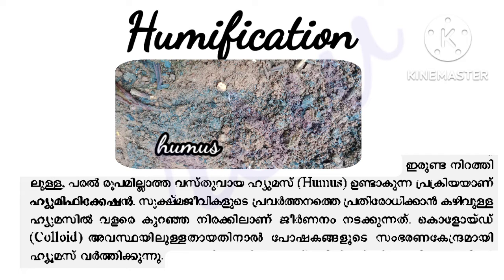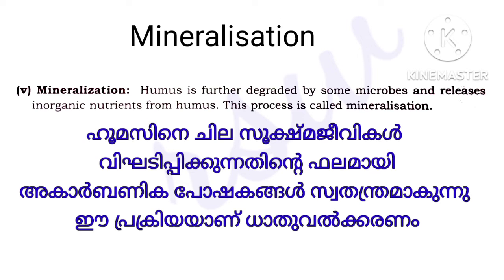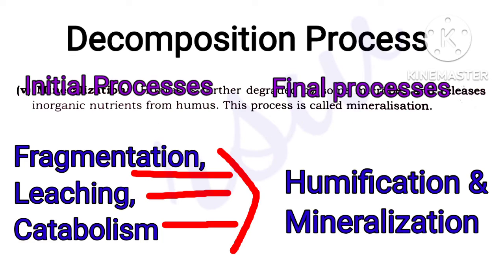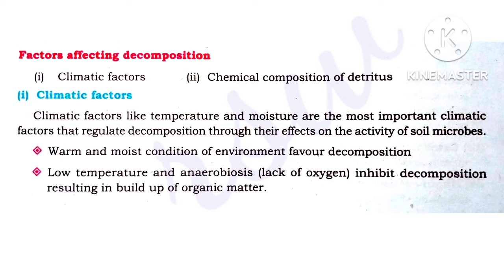Step 5: Mineralization. Humus is further degraded by some microbes, releasing inorganic nutrients from humus. This process is called mineralization. The primary stages of decomposition — fragmentation, leaching, and catabolism — lead to humification and mineralization.